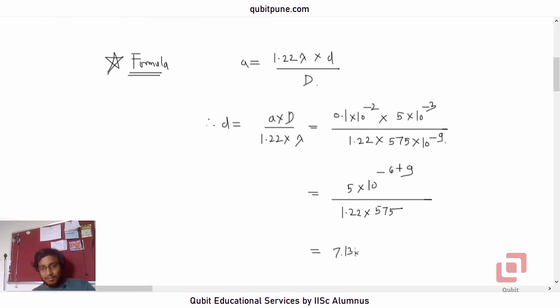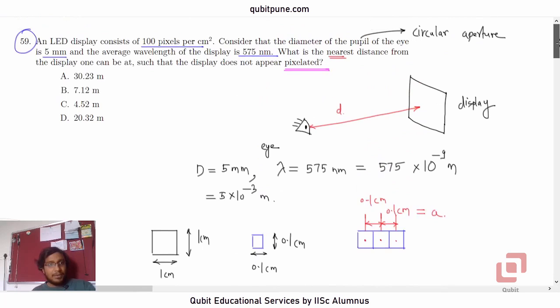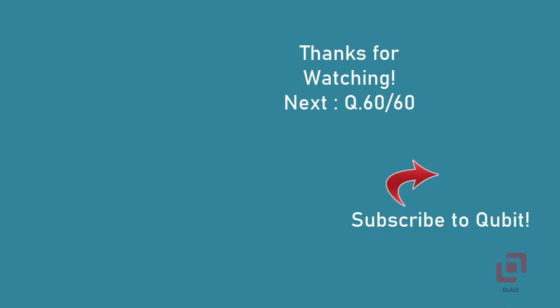7.13 meters, and do we have that value? Yes, we have that in option B. So the correct option to this question is B. We have now completed all MCQs except one, which we will be solving in our next and the last video in this series. Thank you.